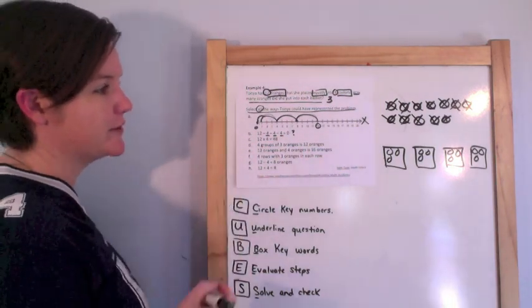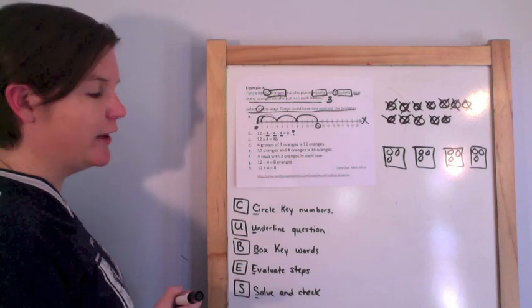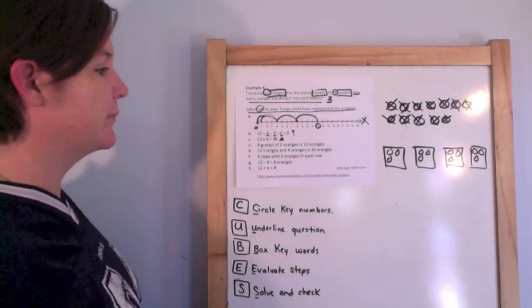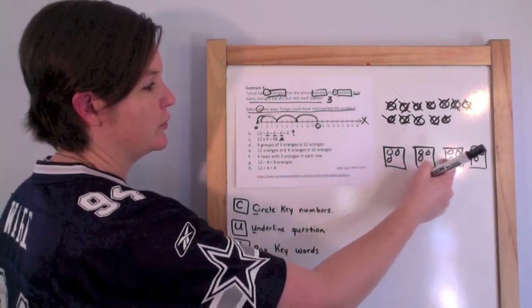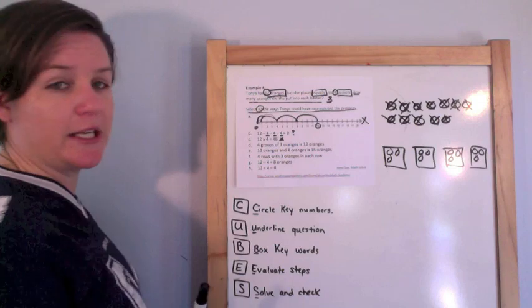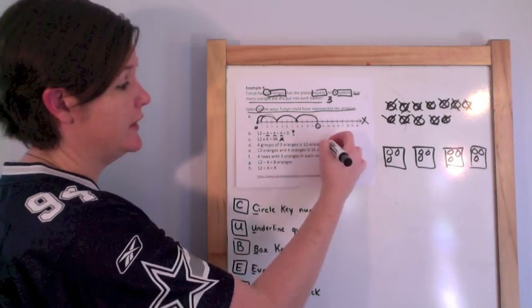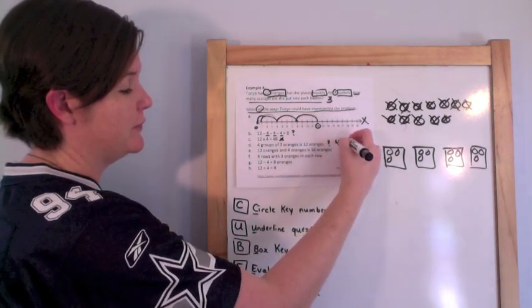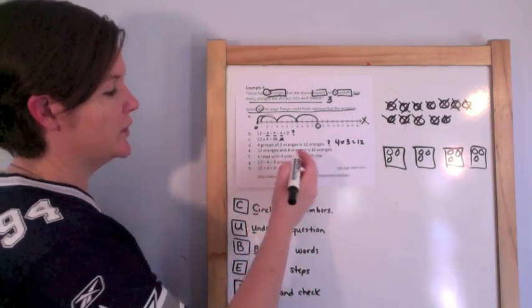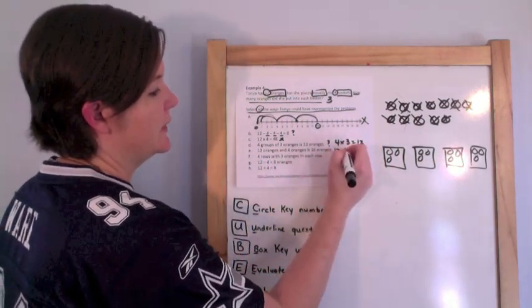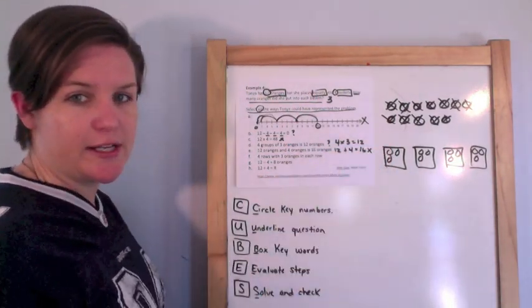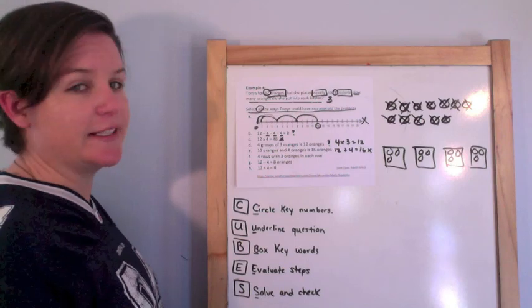Option C: twelve times four equals 48 — no, I only have twelve oranges, I'm not multiplying. Option D: four groups of three equals twelve — yes! Four times three equals twelve, that's what I need. Option E: twelve plus four equals sixteen — no, it's not addition I'm looking for.